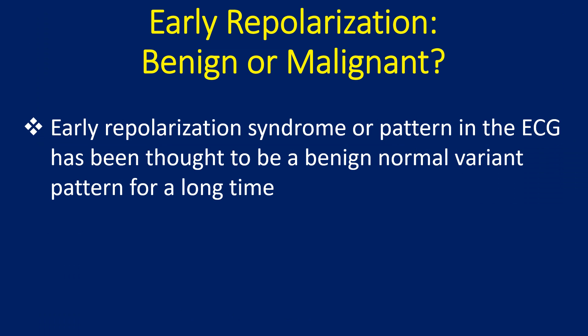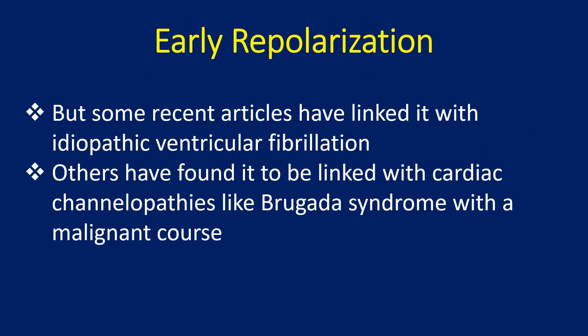Early repolarization syndrome or pattern in the ECG has been thought to be a benign normal variant pattern for a long time. But some recent articles have linked it with idiopathic ventricular fibrillation. Others have found it to be linked with cardiac channelopathies like Brugada syndrome with a malignant course.